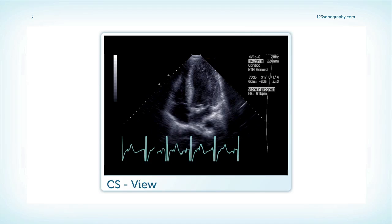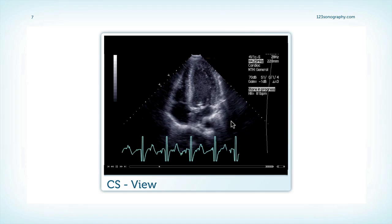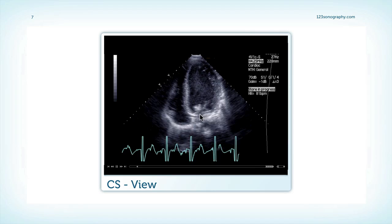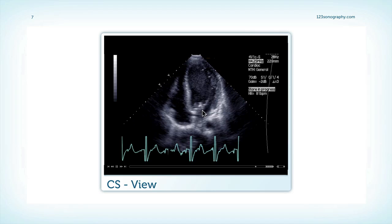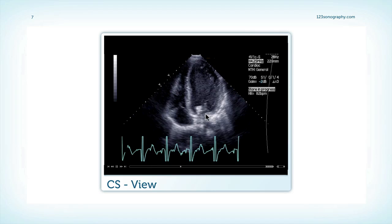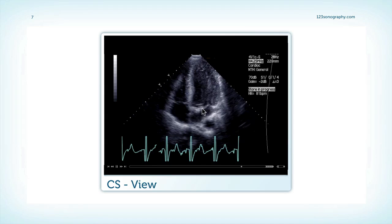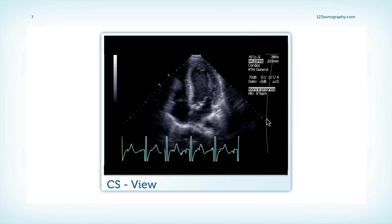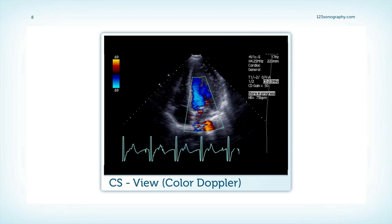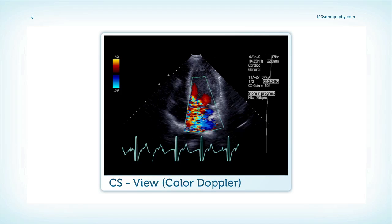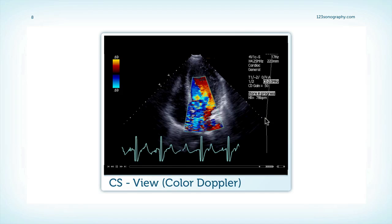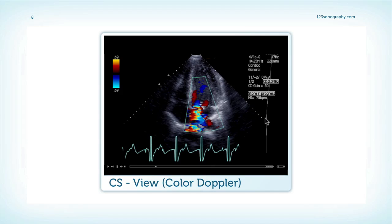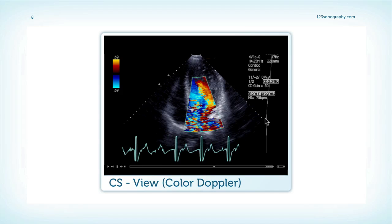Using a coronary sinus view, you can almost appreciate that the defect is located here and the tissue which is destructed. Regurgitation is probably moderate to severe, if not severe.